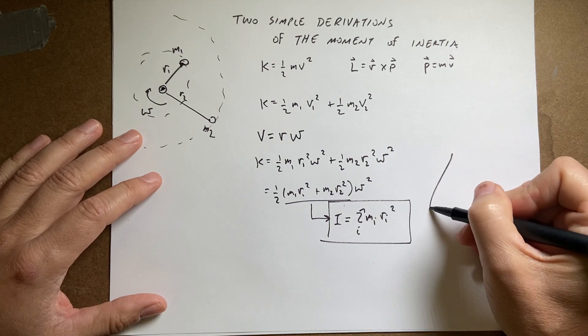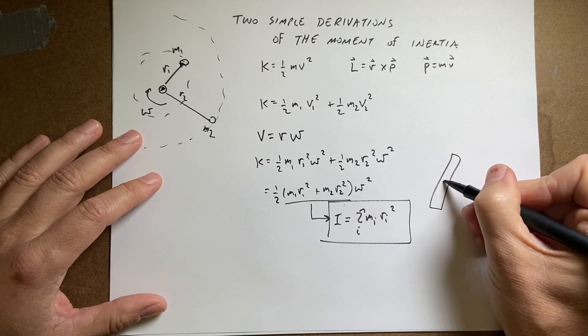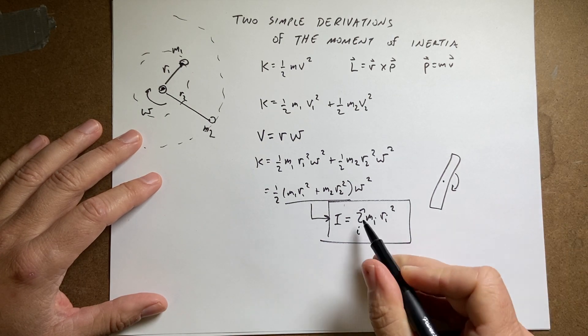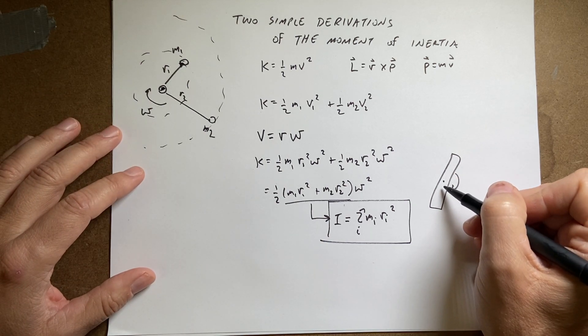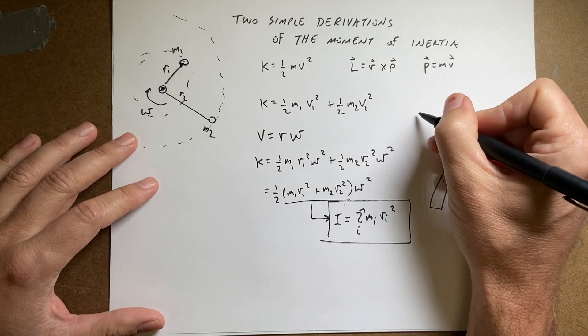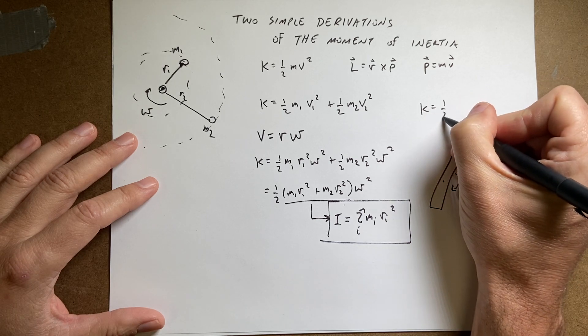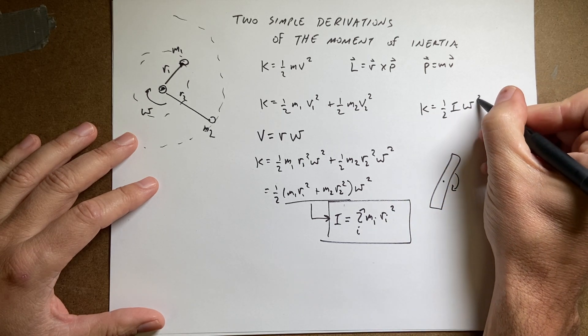So now if I have a rigid object like this, like a stick, and I spin it, I can find that moment of inertia, which I'll do in another video, and then use that to find the kinetic energy, where the kinetic energy is 1 half i omega squared.